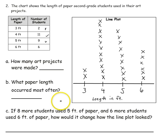So there's my finished line plot. The first question, then, is how many art projects were made? I can go to my line plot and count all of the x's, or I could just look at my chart and count the numbers there.